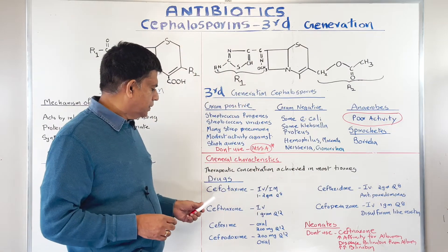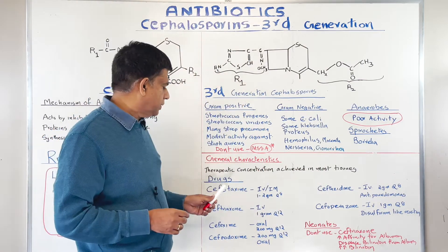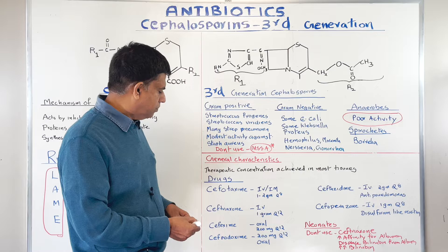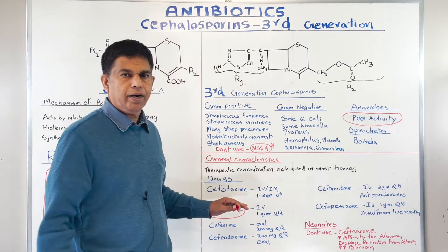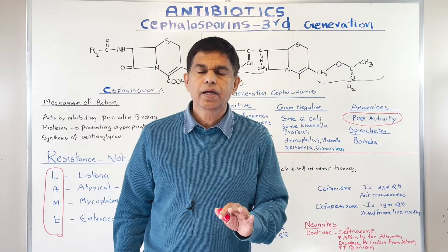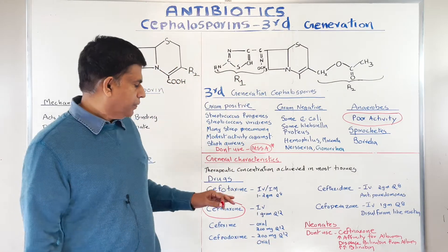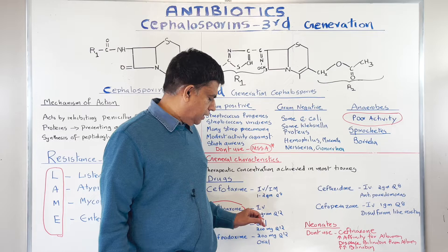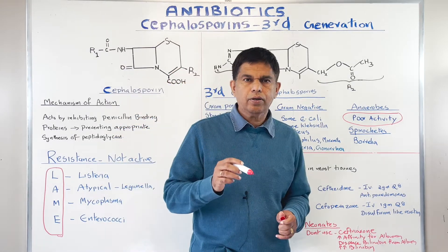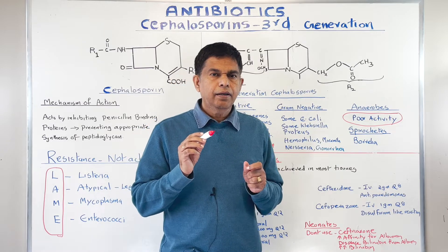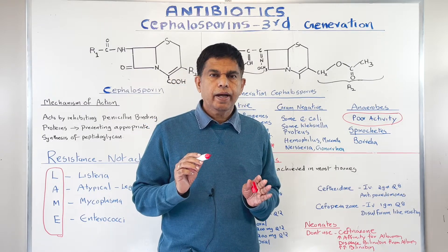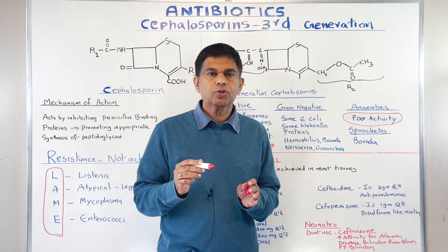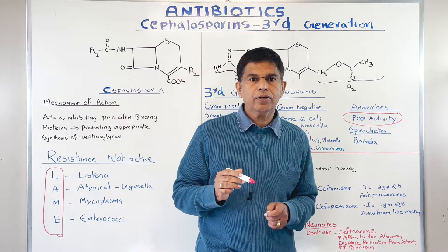Now let's look at the drugs. The prototype drug in this group is cefotaxime. It can be given IV or IM, 1 to 2 grams every 12 hours. The most common drug used in the United States is ceftriaxone, given IV at 1 gram every 12 hours and can go up to 2 grams. One important thing about ceftriaxone: it can displace bilirubin from albumin, so when you give ceftriaxone, you can have elevated bilirubin in the neonate, which can deposit in the brain and cause brain complications.